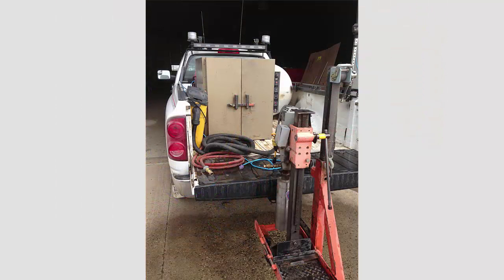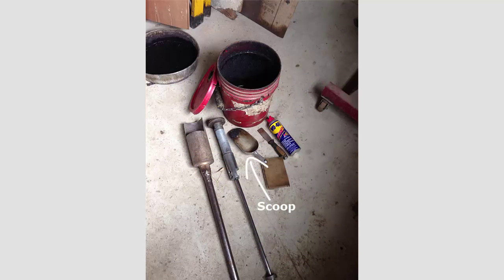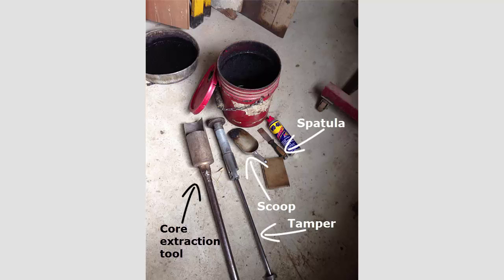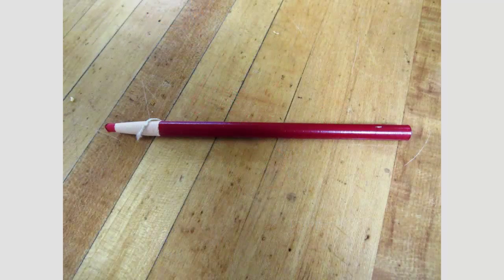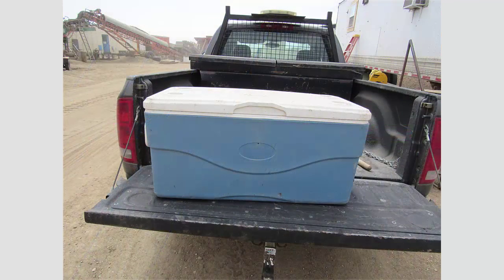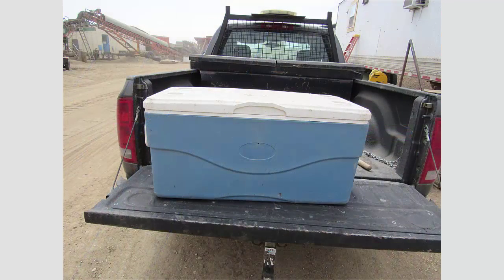To conduct the test, you need a coring machine, water, scoop, spatula, tamper, and core extraction tool. You also need a representative asphalt mix to fill the holes. Additionally, you need a wax pen to label the cores and a box or container to transport the cores.